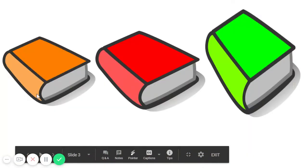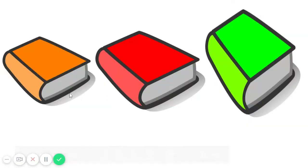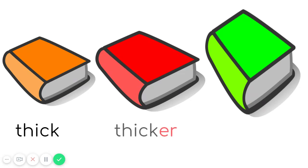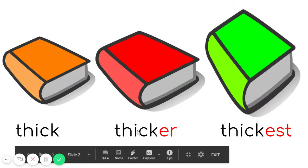We have here books. The orange book is thick. The red book is thicker. And the green book is the thickest. Thick, thicker, and thickest.